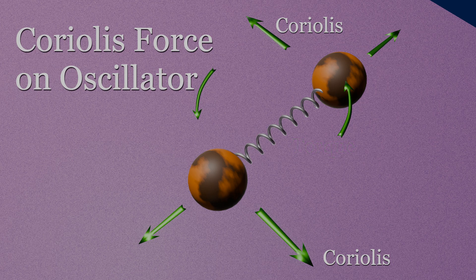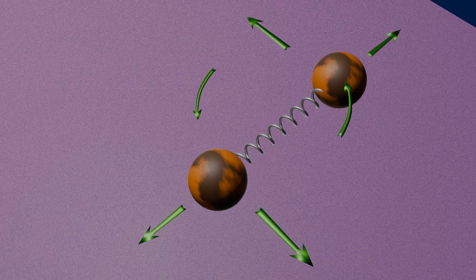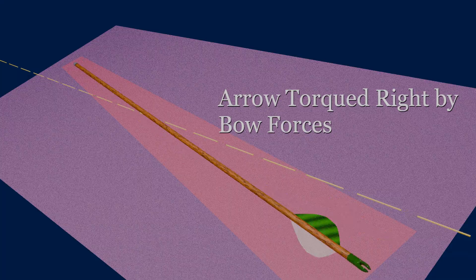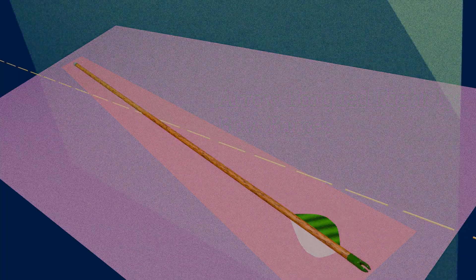The rotation in the horizontal plane of the arrow changes the direction of its oscillation. Gravitational forces want to rotate the arrow point down in the vertical plane.